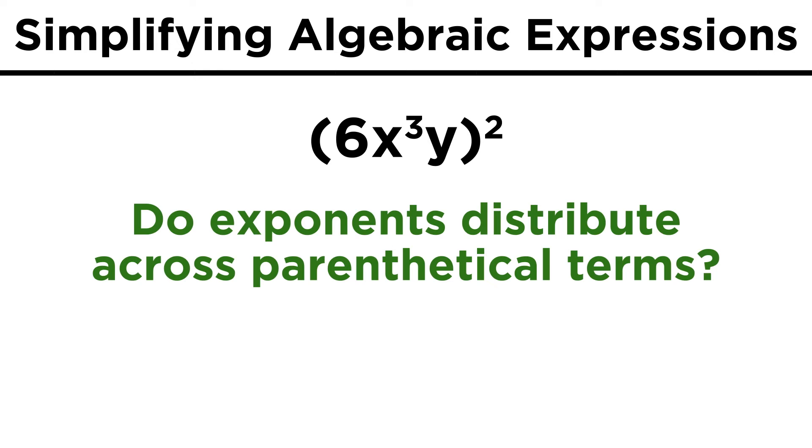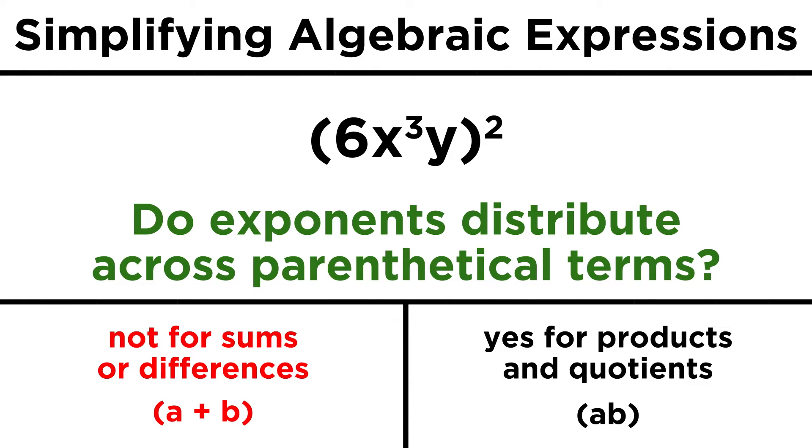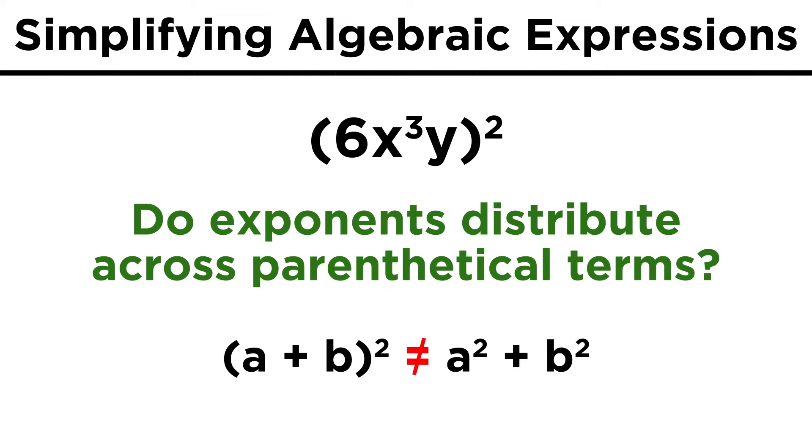The first thing we must understand about exponents that operate on parenthetical terms is that while they do not distribute across sums or differences, they do distribute across products and quotients. In other words, a plus b quantity squared is not equal to a squared plus b squared.